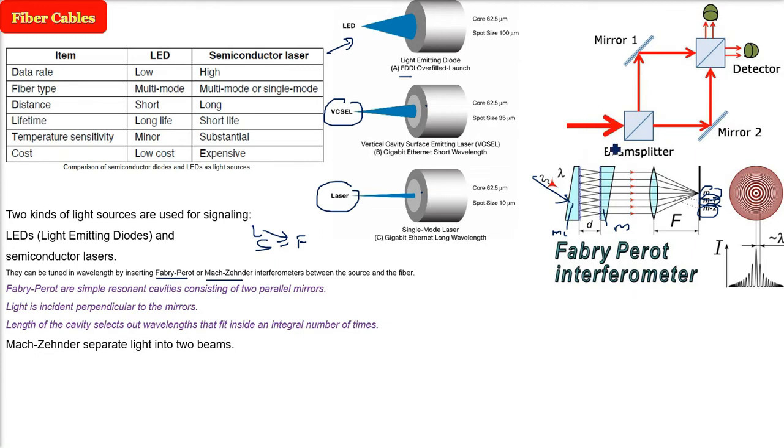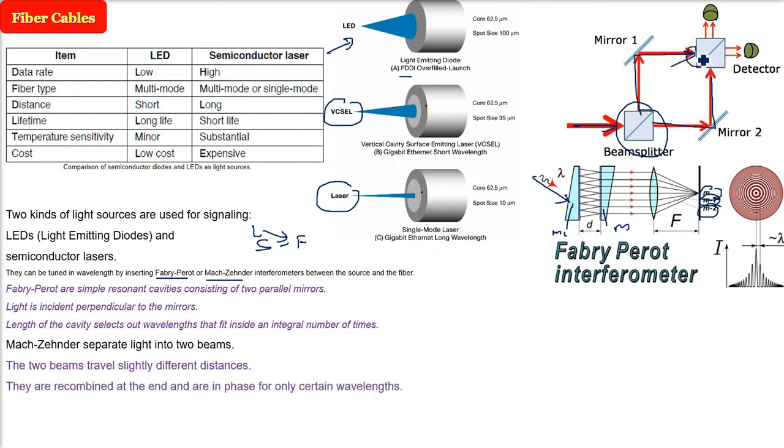Then the Mach-Zehnder separates light into two beams. You see here, beam splitter. The two beams travel slightly different distances and they are recombined at the end and are in phase for only certain wavelengths which we want to be tuned in. There are two, Fabry-Perot and the Mach-Zehnder. These are interferometers.